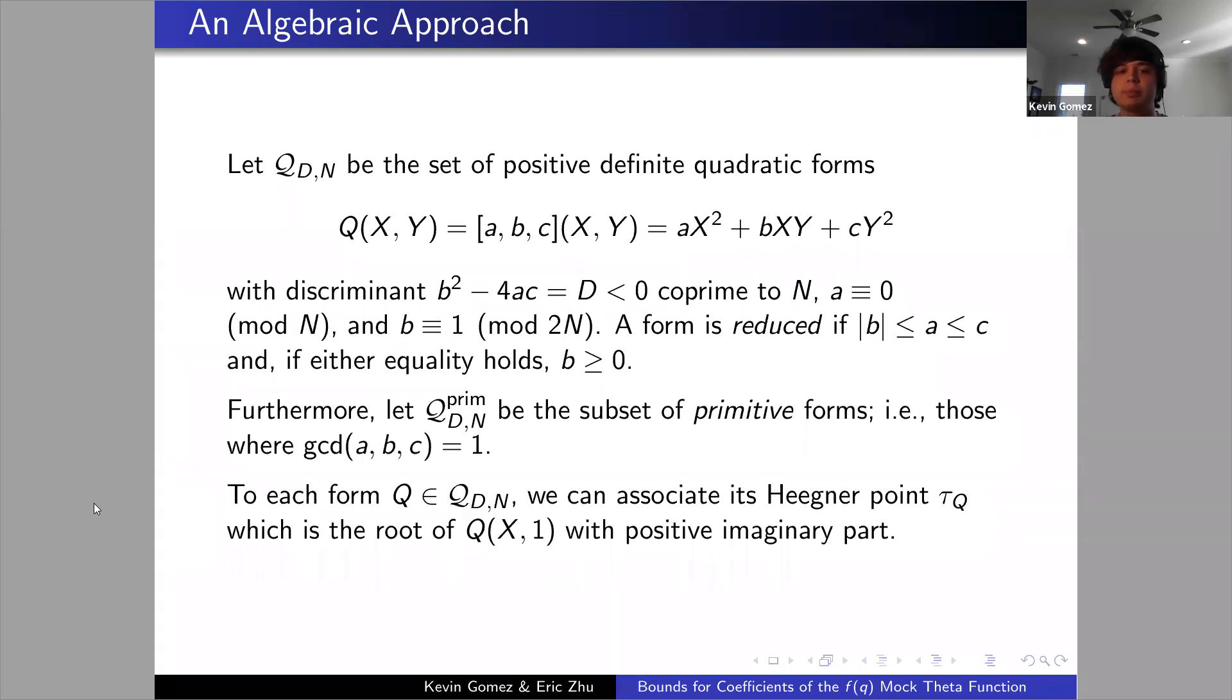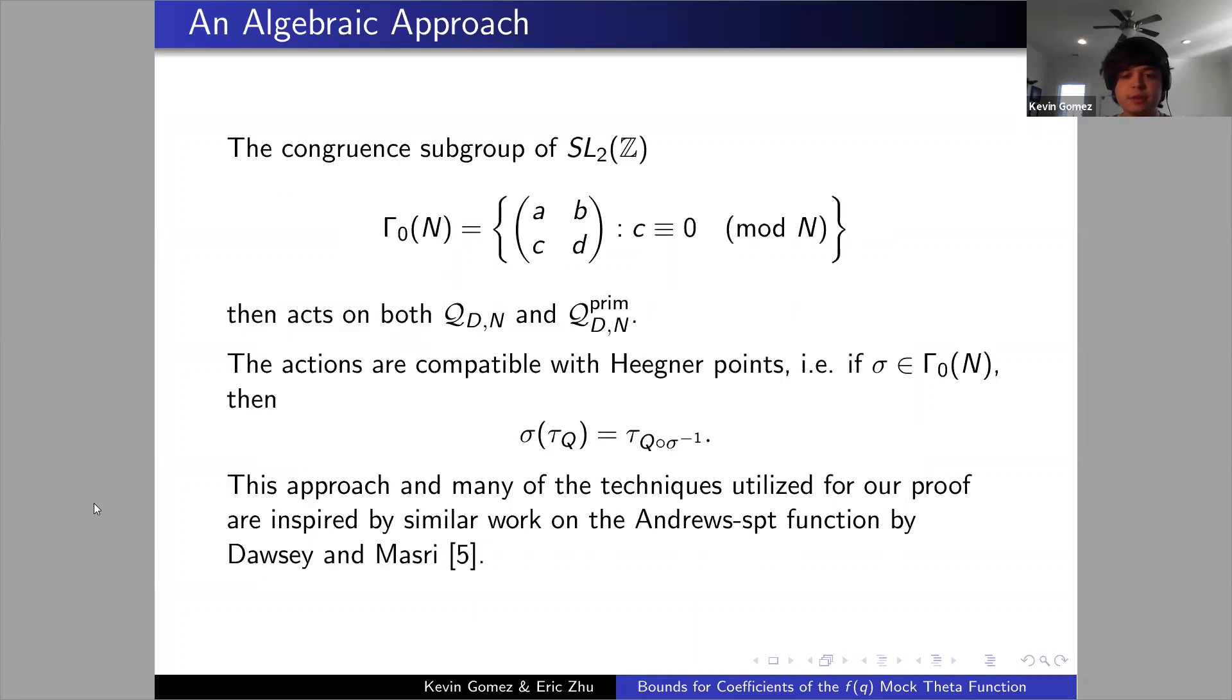With this foundation we can consider the congruence subgroup Gamma_0 of n, which can act on both of these sets. The actions are compatible with the Heegner points in the sense that if we act on the Heegner point, that's just the same thing as taking the Heegner point of the quadratic form with the action already applied. This whole technique was mostly motivated by our advisor Professor Masri, and a similar technique was applied to resolve Chen's inequalities for the Andrews spt function. This was done by Dosier and Masri, I think in 2018.